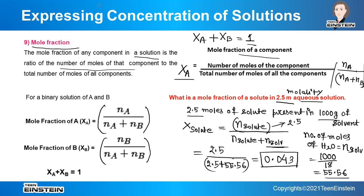There are a total of nine types of concentration expressions, and different types are used in different cases. PPM is used when a very trace amount of solute is present — mostly for impurities in the atmosphere or in water. Mole fraction will be very important in what we study next, and molarity, molality, and normality are also the three most commonly used concentration terms.